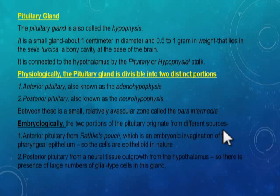The pituitary gland is also called the hypophysis. It is a small gland about one centimeter in diameter and 0.5 to 1 gram in weight. It lies in the sella turcica, a bony cavity at the base of the brain. It is connected to the hypothalamus by the pituitary stalk or hypophysial stalk.